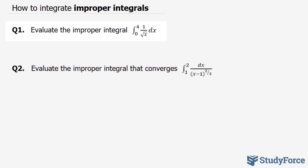The reason why this function is improper is because of the denominator — the square root of x. We know that the denominator of a fraction cannot equal zero. However, our bounds are between zero and four, so that's problematic for us.